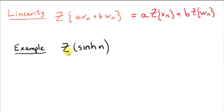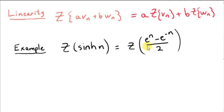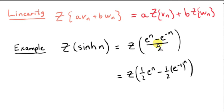As an example, we will apply the linearity property of the Z-transform to get the Z-transform of the hyperbolic sine of n, or sinh of n. Sinh of n is e to the n minus e to the minus n, over 2. Notice that this is a linear combination of geometric sequences: e to the power of n and e to the power of minus n, which can be written as e to the power of minus 1, to the power of n.